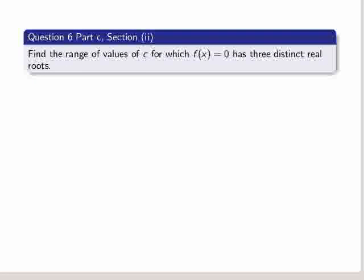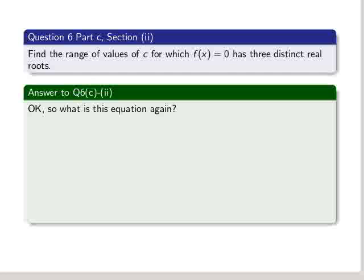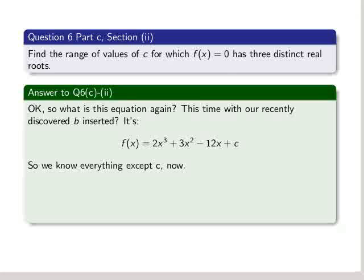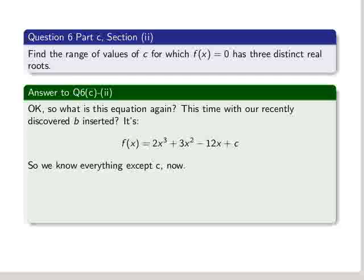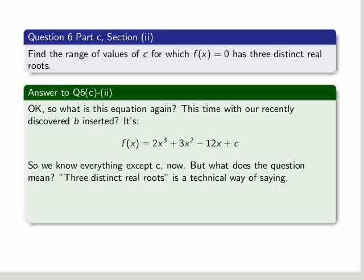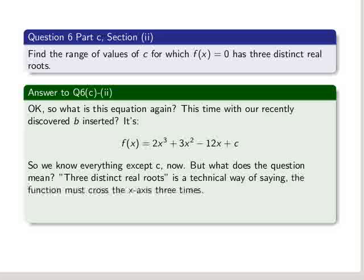We move on to section 2, part c, which is actually the final section in this question. Find the range of values of c for which f of x equals zero has three distinct real roots. So what is this equation again, this time with our recently discovered b inserted? We get 2 times x cubed plus 3 times x squared minus 12x plus c. So we know everything now except c. But what does the question mean? Three distinct real roots? It's a technical way of saying the function must cross the x-axis three times. So what has c got to do with that?